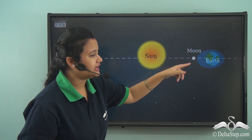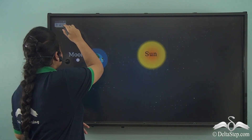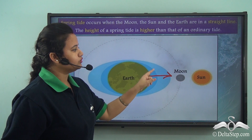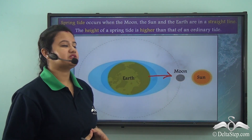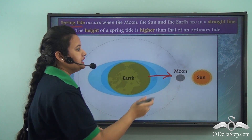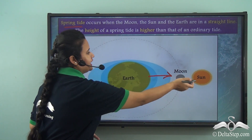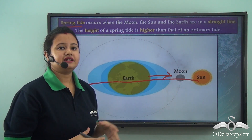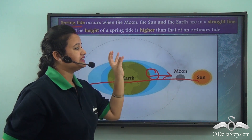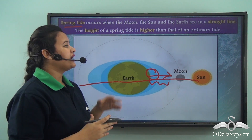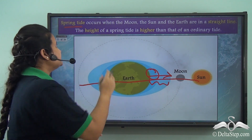This leads to an extreme rise in the water level. The extreme rise in water level due to the combined pull of the moon and the sun is known as spring tide. Spring tide occurs when the moon, sun, and the earth are in a straight line, causing the gravitational pull of the sun and the moon to act in the same direction, resulting in an extreme rise in the water level.